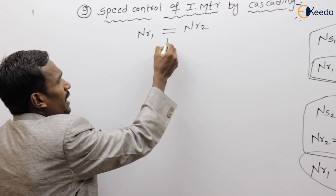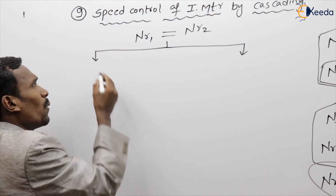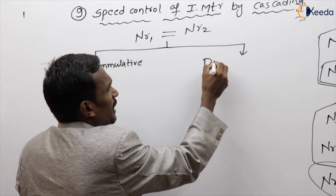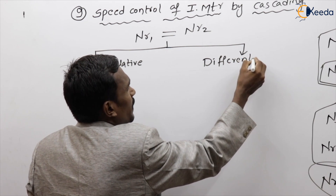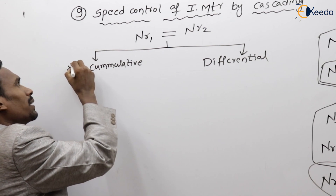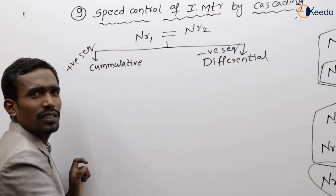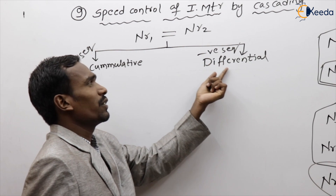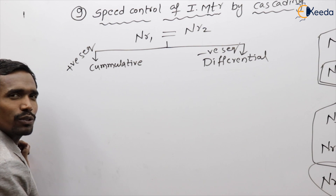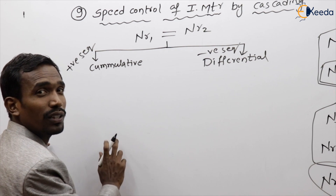The coupling is of two types: cumulative coupling and differential coupling. Cumulative coupling corresponds to positive sequence, and differential coupling corresponds to negative sequence. I will derive the expression for the positive sequence or cumulative connection; you should derive the differential case yourself.